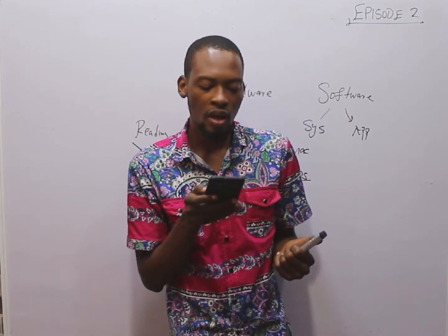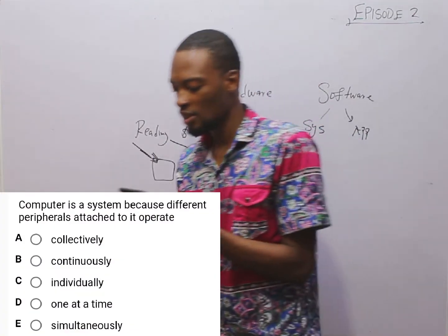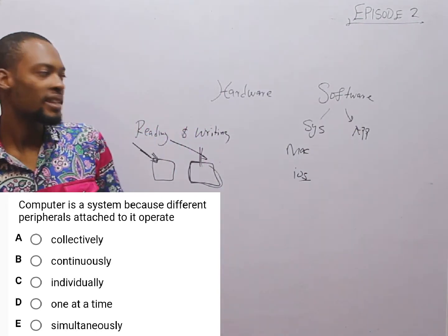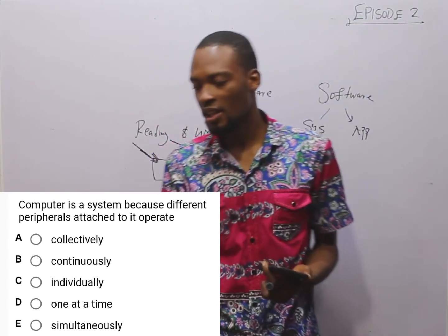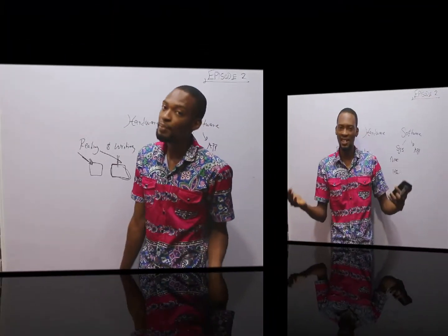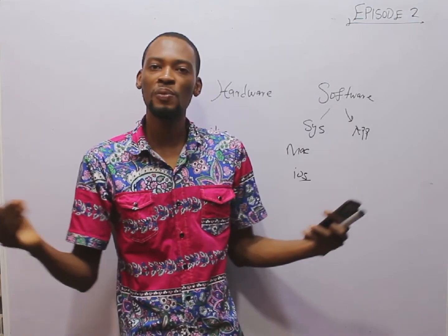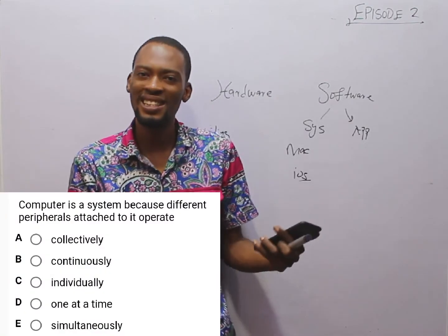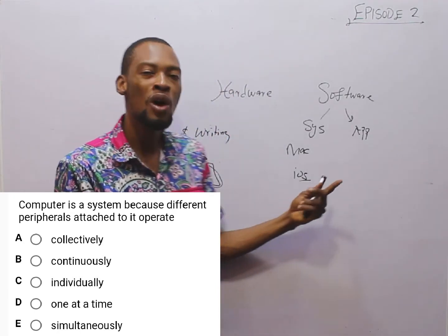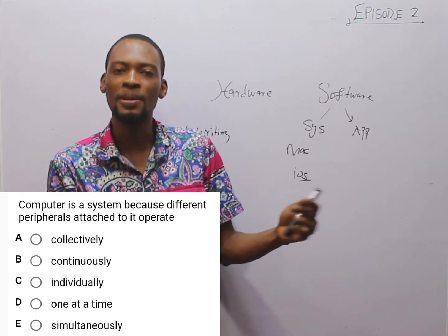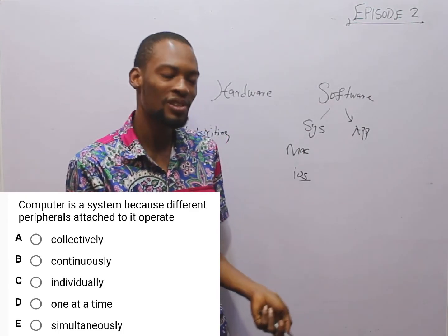The next question: a computer is a system because different peripherals attached to it operate collectively. The answer is collectively. A system — like the human digestive system — is all the various parts coming together to perform a function, like digesting food. Similarly, in a computer system, different parts come together to work collectively. Even an organization is a system — every person coming together to work on a particular goal. So option A is correct.